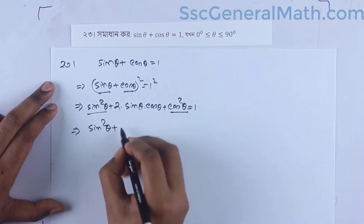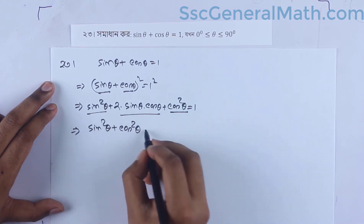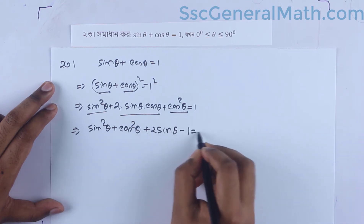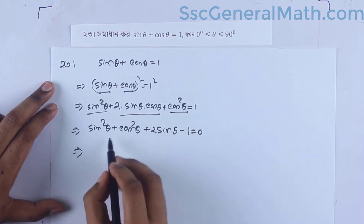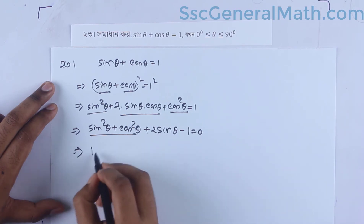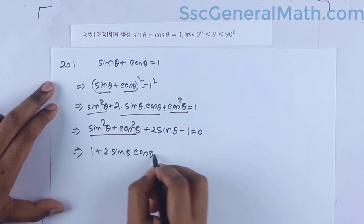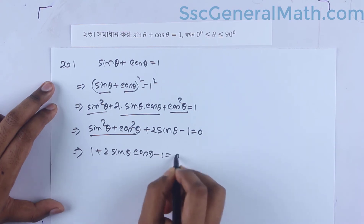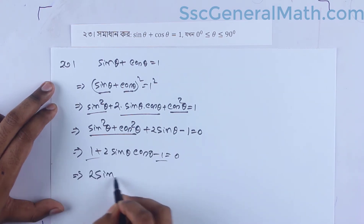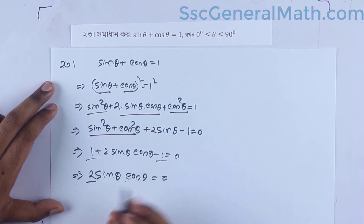Squaring both sides: sin squared plus cos squared plus 2 sin theta cos theta equals 1. Since sin squared plus cos squared equals 1, we get 1 plus 2 sin theta cos theta equals 1, so 2 sin theta cos theta equals 0.